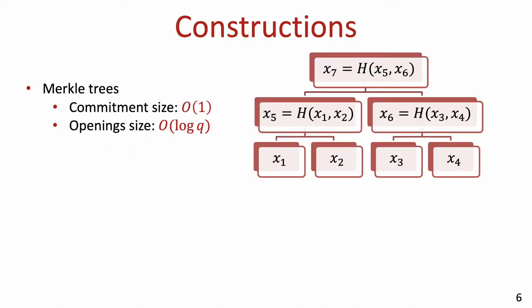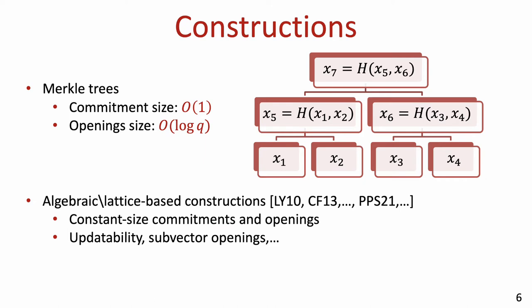Perhaps the earliest construction of VCs is Merkle trees, suggested by Merkle back in the late 80s. Merkle trees produce commitments of length which is independent of the size q of the underlying vector. The length of the local openings is the depth of the tree, which is logarithmic in q. More recent constructions based on specific algebraic or lattice-based assumptions have both constant size commitments and constant size openings.